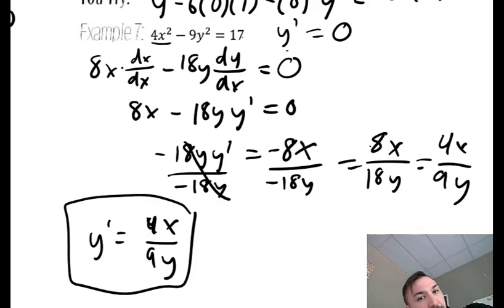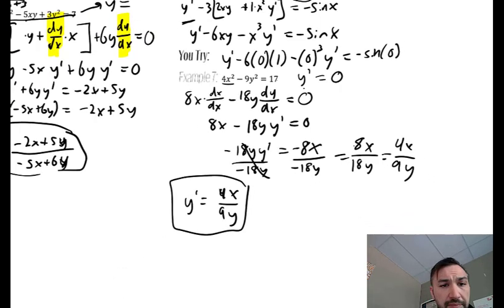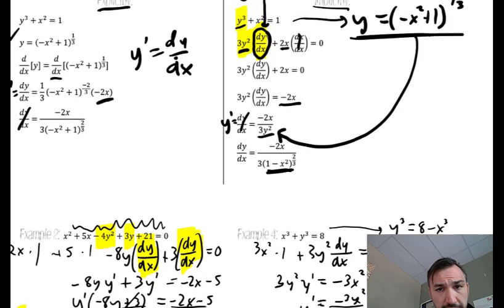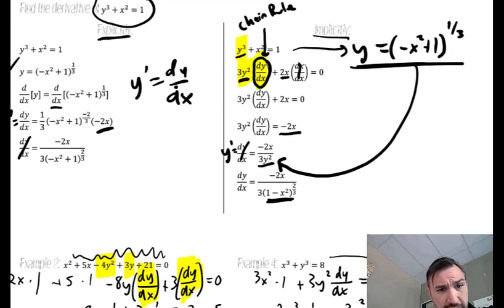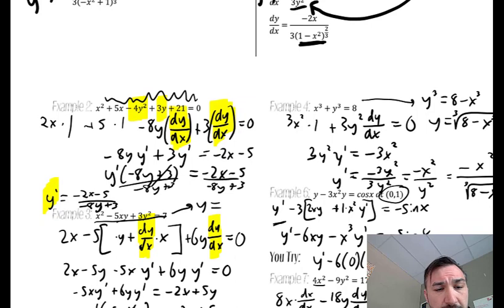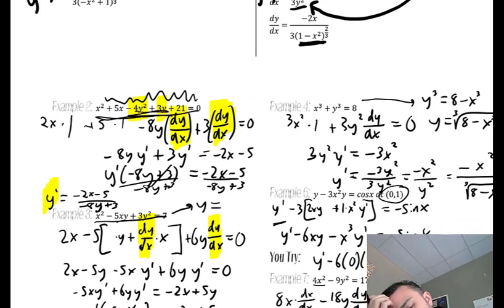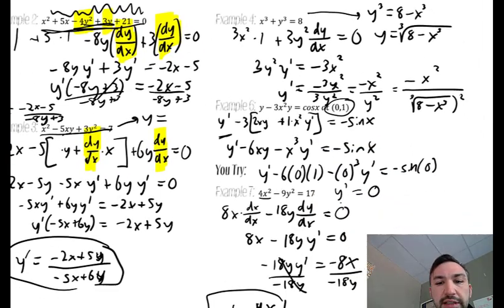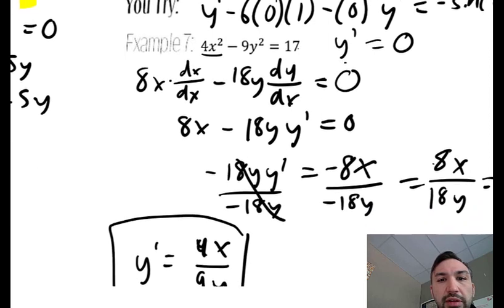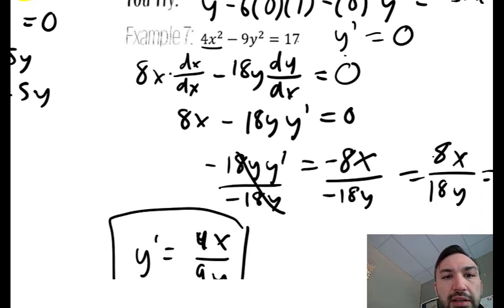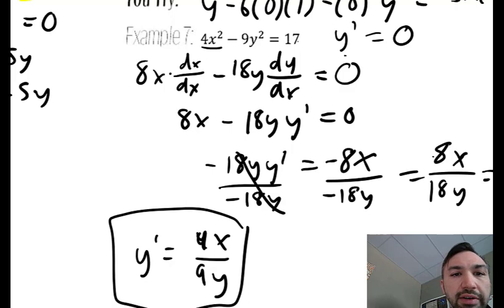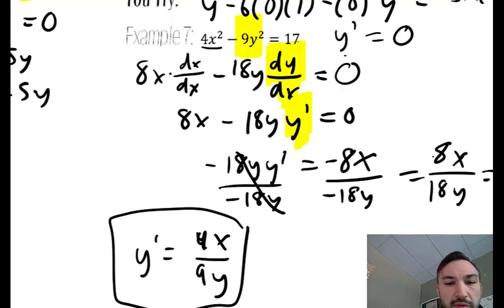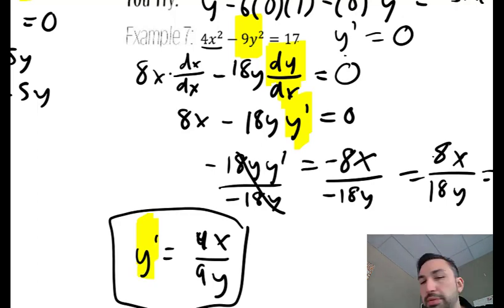So — implicit differentiation. It allows us to not have to solve for y. On the first example it's not so hard to solve for y, so it's not a big deal. But on example 2, trying to solve for y when you've got multiple y's in there would be very difficult and completely unnecessary. As long as we're careful that when we take the derivative of y — and x is our variable — we put in a dy/dx, and then that is what we ultimately solve for, you've got implicit differentiation down.